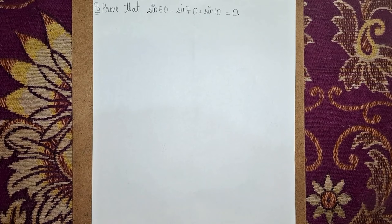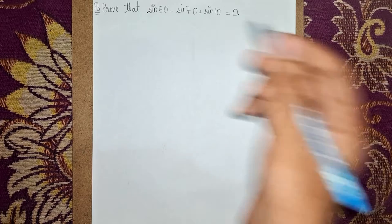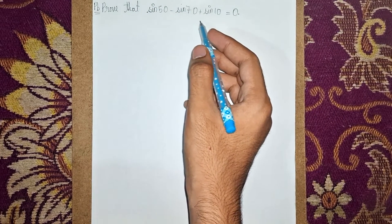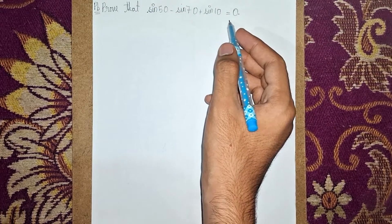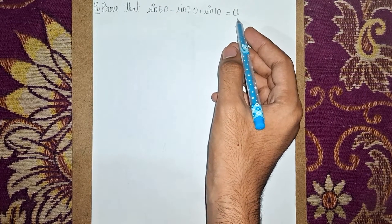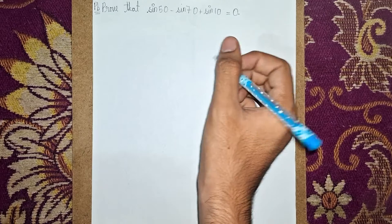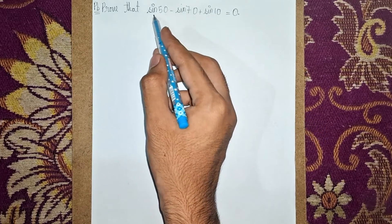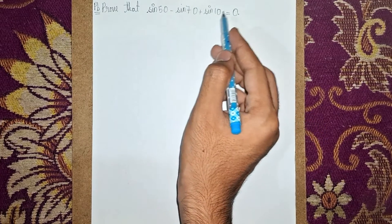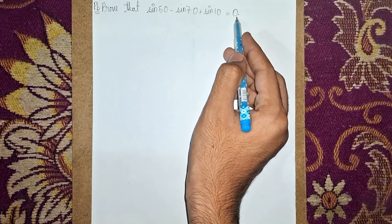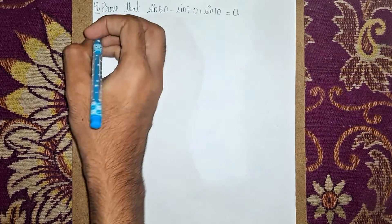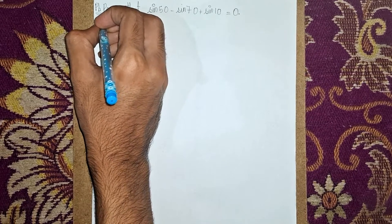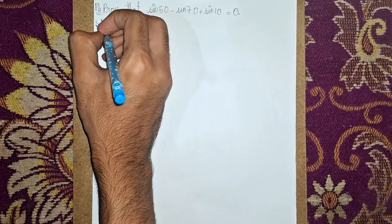Welcome back to my channel. The question is: prove that sin 50 minus sin 70 plus sin 10 is equal to zero. This is a transformation question. When we solve this, we get the answer as zero. So first, let's look at the solution.